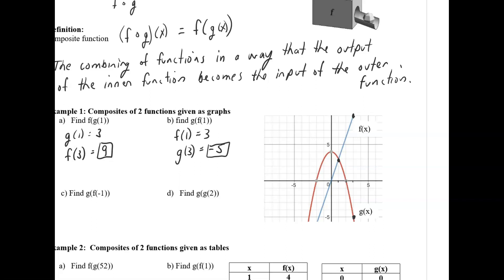Now let's find g of f of negative 1. First, f of negative 1: looking at the blue function at negative 1, the output is negative 3. That output now becomes the input of g, the outer function. So we find g of negative 3 — looking at the parabola at negative 3, the output is again negative 5.